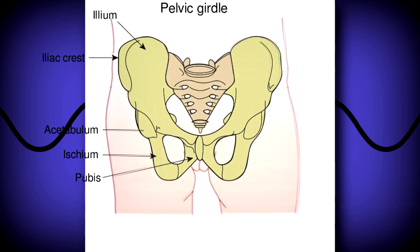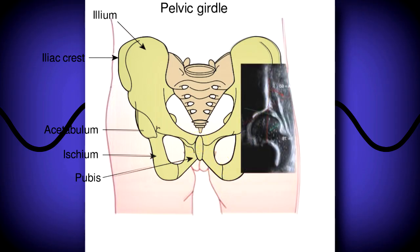Here we have a diagram of the pediatric hip, and here you can see all the bony landmarks of the pelvis. You have the ilium, the acetabulum where the femoral head goes into, the ischium, the pubis, and right here in the middle is the pubic symphysis. Typically when you're scanning, you're seeing the ilium and the acetabulum in a horizontal plane. I've rotated the image and put it here against the iliac wing so you can see the relation of the ultrasound image to the sonographic image.